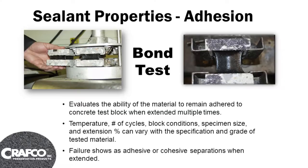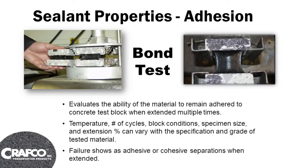As far as adhesion goes, this is part of the ASTM testing. There are a hundred different sealants that we manufacture, and a lot of them are based on specifications. A bond test is required under ASTM, and the sealant type — whether it's type 1, 2, 3, or 4 under D6690 — really surrounds this bond test. They take concrete blocks, put an inch of sealant between them typically, and cool it down to the desired temperature. For ASTM D6690 type 1, they cool it down to 0 degrees Fahrenheit in the freezer.